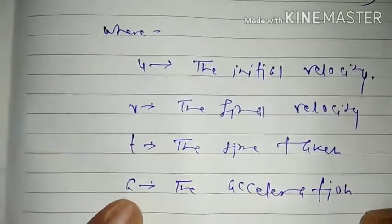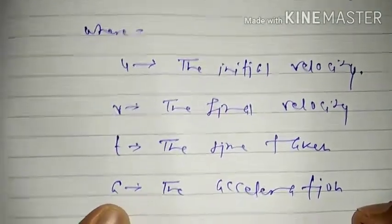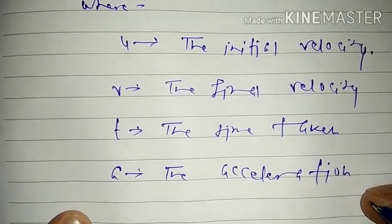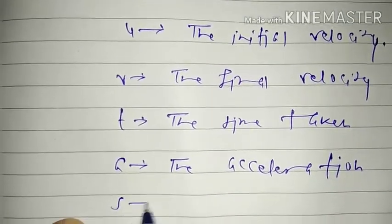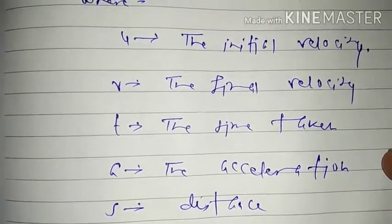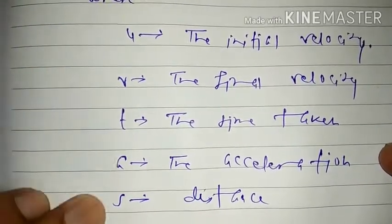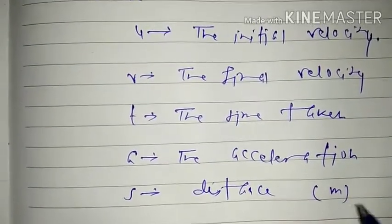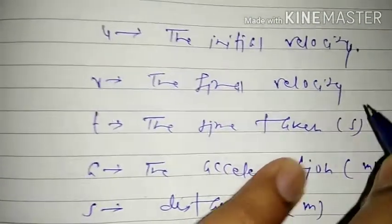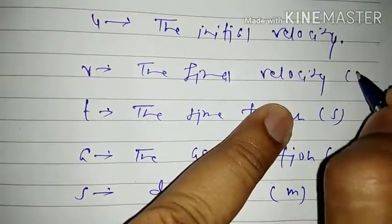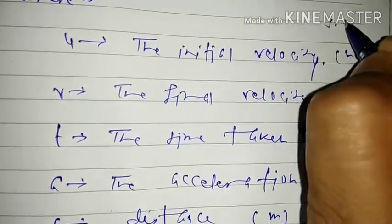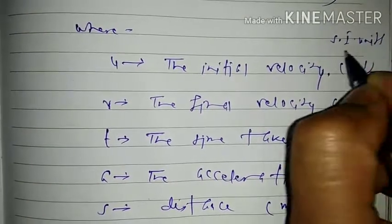T represents the time taken. A represents the acceleration, that is the rate of change of velocity. As we have seen in previous classes, acceleration may be both positive and negative; negative acceleration is called retardation or deceleration. S is the distance covered. The SI unit of distance is metre, acceleration is metre per second squared, time is second, and both U and V being velocities have SI unit metre per second.